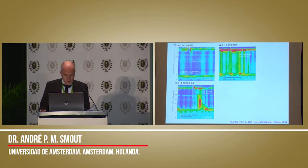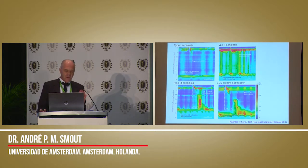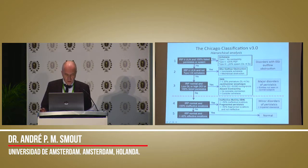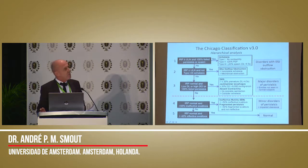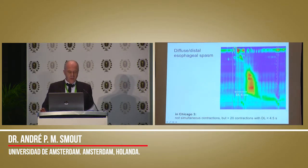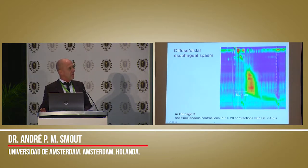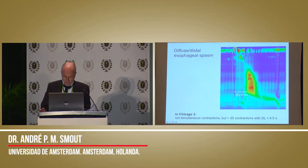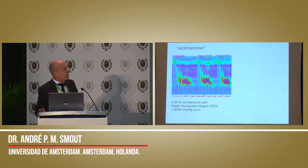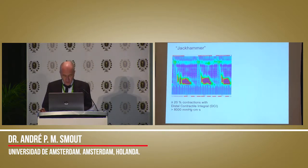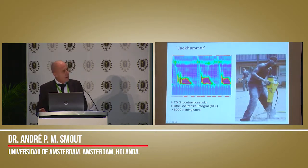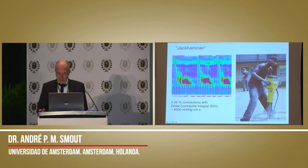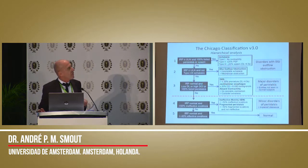If you don't have achalasia but still have an abnormal relaxation of the sphincter, you call it EGJ outflow obstruction. Moving further in the scheme — if you don't have that, you're looking for spastic disorders or other major abnormalities. Diffuse esophageal spasm is nowadays diagnosed as a short distal latency, whereas in the old days it was simultaneous contractions — a totally different criterion. And I can tell you this is not completely true in all patients with spasm; Chicago 4 or 5 will probably change that. The jackhammer esophagus is a new entity from Chicago, characterized by a high DCI.